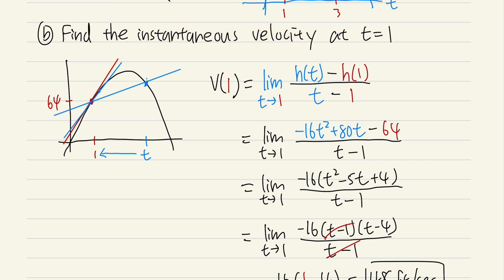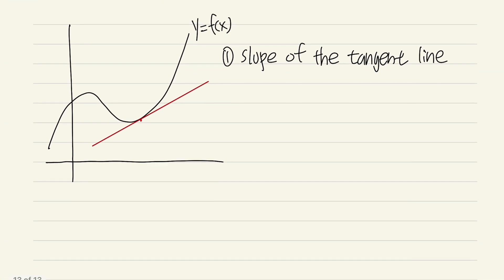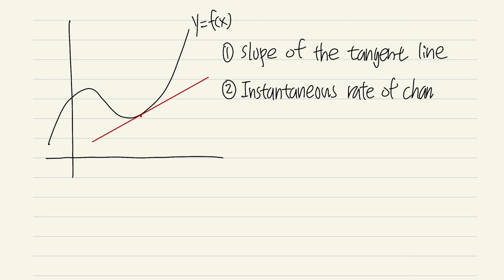That's how you can interpret it, and of course it depends on what the function represents. But in general, the second way to interpret what we are doing is finding the instantaneous rate of change. The keyword is instantaneous — that is the rate of change at one particular value, and the slope is really just the rate of change, especially in application questions.